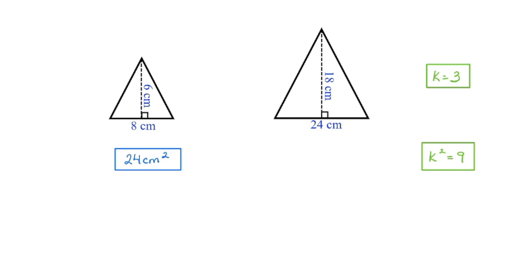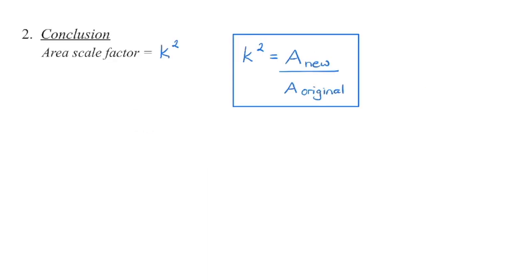So now what we can do is say that we know the new figure is going to be 9 times as large as the original. So now I can just quickly multiply 24 times 9, and when I do that, I've got my new area. When we refer to scale factor, we typically refer to the linear scale factor. But if we were to square the linear scale factor, we have what's called the area scale factor — how many times larger the area of our new figure is going to be in relation to the area of our original figure.